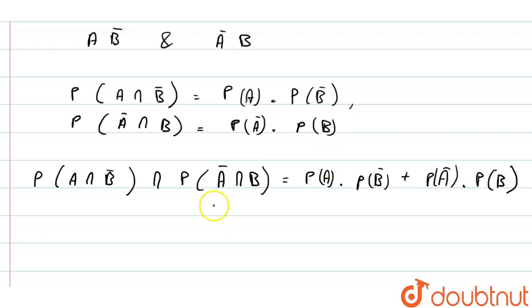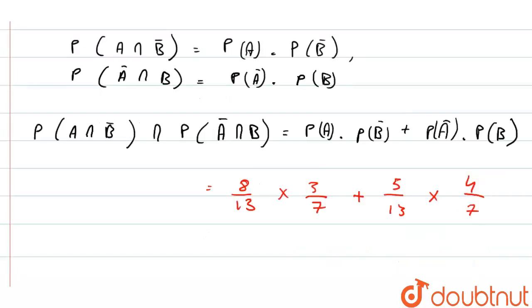We know that P(A) is 8/13, P(B') is 3/7, plus P(A') is 5/13 into P(B) is 4/7.